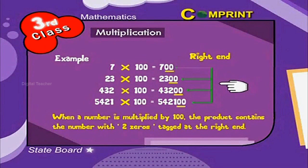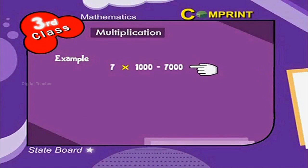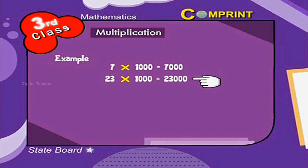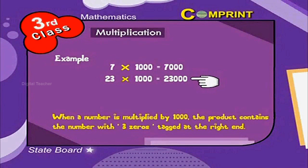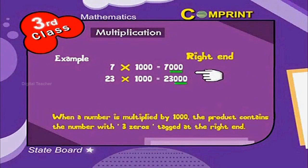For another example, 7 into 1000 is equal to 7,000; 23 into 1000 is equal to 23,000, etc. Thus, when a number is multiplied by 1,000, the product contains the number with three 0s tagged at the right end.